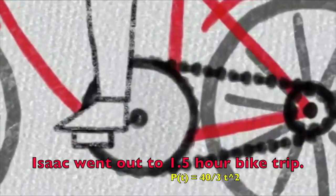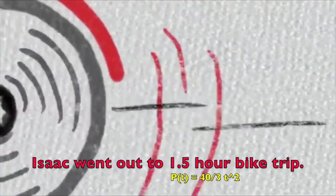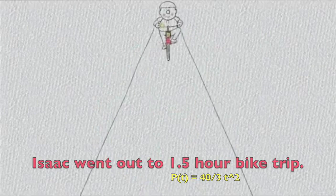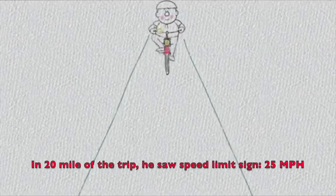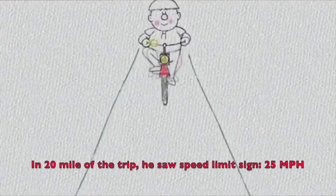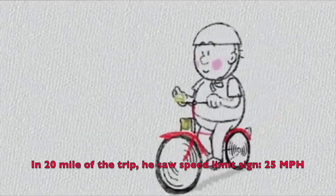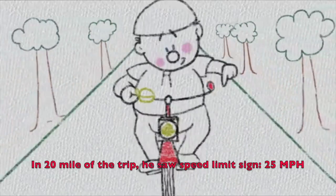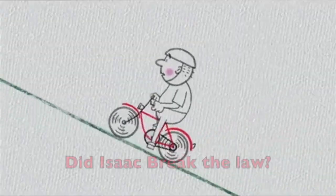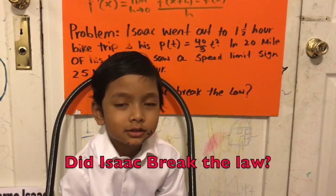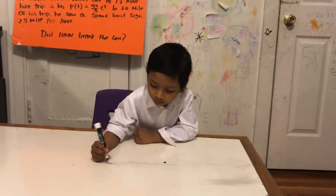One day, Isaac went out to one-and-a-half-hour bike trip, equals 40 over 3 T squared. At 20 miles off his trip, he saw a 25 mph speed limit sign. What I want to find is whether Isaac broke the law or Isaac did not break the law. So, let's do it. First, I got a wrong diagram.